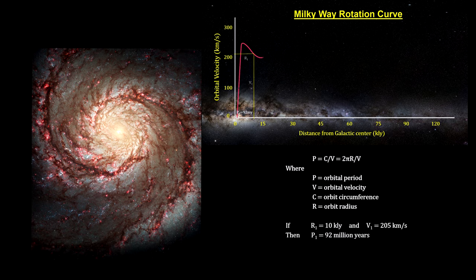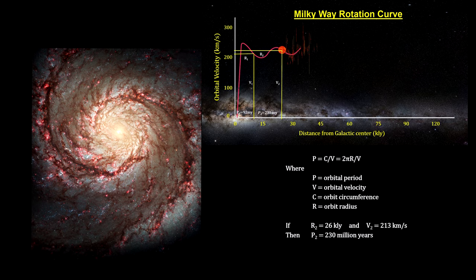For example, in our Milky Way, stars near the central bulge can complete a revolution around the central bulge in about 90 million years. Out here, 26,000 light years away from the center, it takes 230 million years. And in the outskirts, it can take over 400 million years.